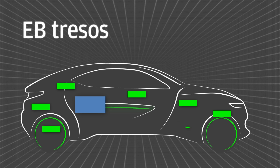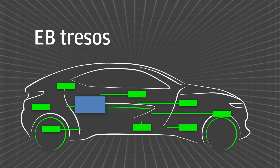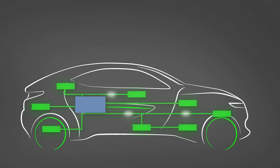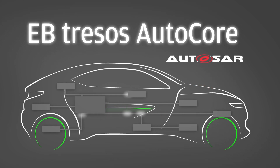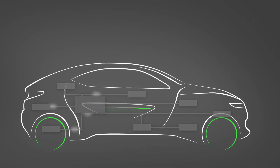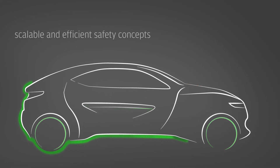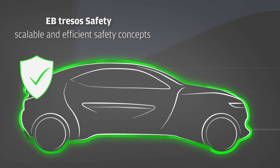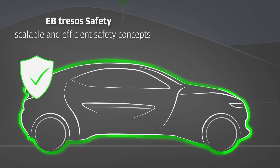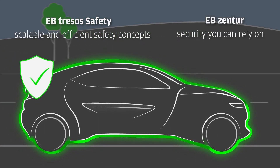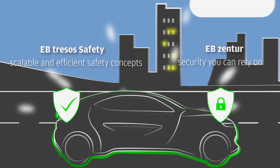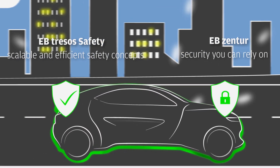EB Tresos serves tier-1 suppliers and car makers with reliable classic AUTOSAR basic software. EB Tresos AutoCore covers a broad range of automotive real-time applications while enabling fast time to market. It enables the development of scalable and efficient safety concepts up to ASIL-D. EB's embedded security solutions protect ECUs in vehicle networks and their connections to the outside world.